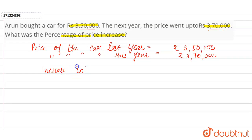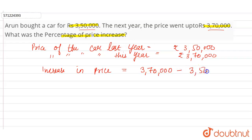The increase in price would be the price of the car this year minus the price of the car last year. So 3 lakh 70,000 minus 3 lakh 50,000 gives us an increase in price equal to rupees 20,000.